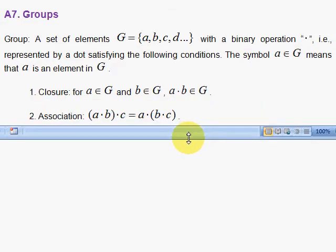Next is association. That when you have three of the group elements, A, B, and C, and perform the binary operation twice, you can do the first two first, A dot B, and get that result.